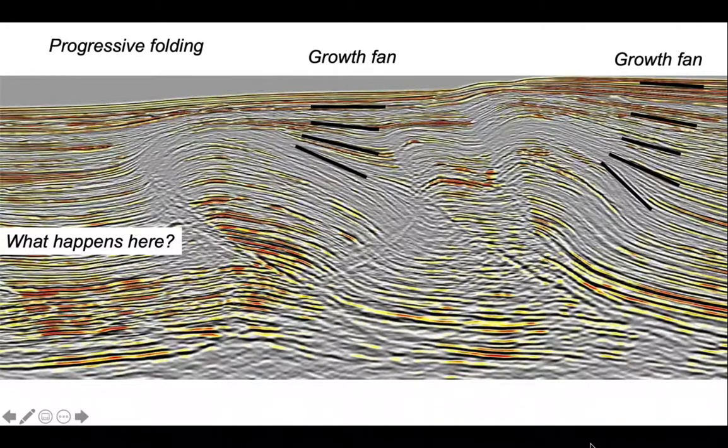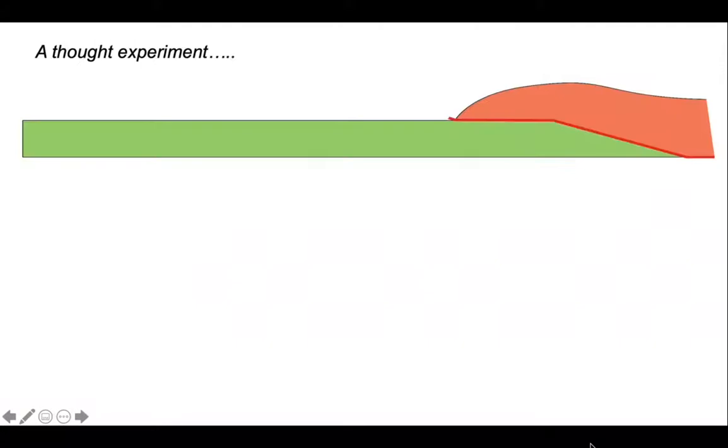Let's try and cartoon up what might be going on. Here we have a thrust climbing out onto the seabed. Sedimentation is going to occur on the left hand side where there's space, but not on top of the thrust sheet. Here the thrust then climbs up onto this little patch of sediment.